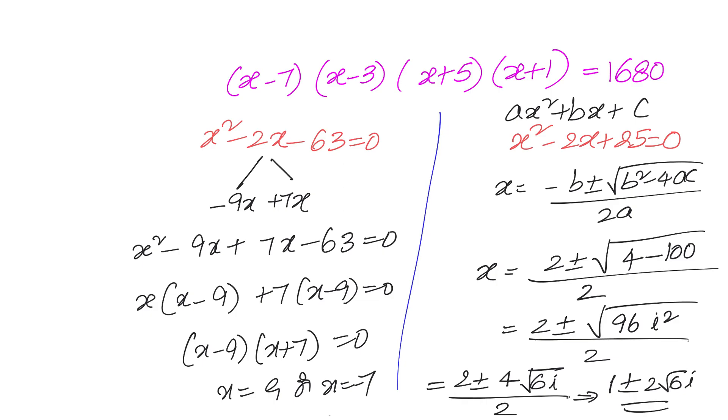So the other values of x what we can get is one is 1 plus 2 root 6 of i, and another is 1 minus 2 root 6 into i.